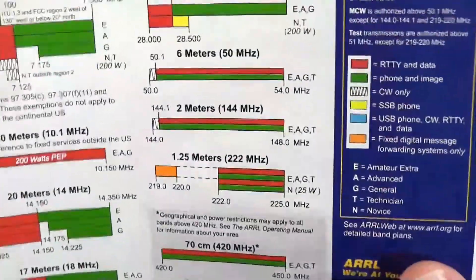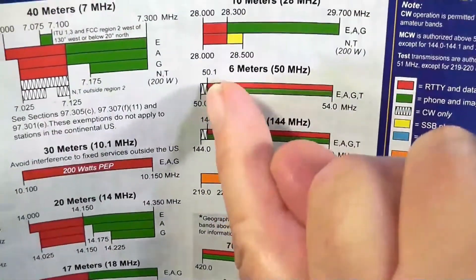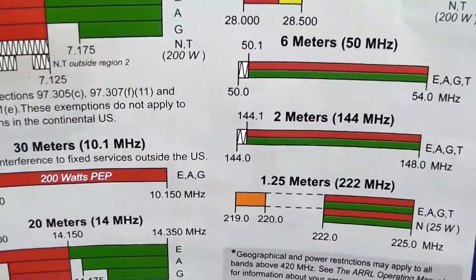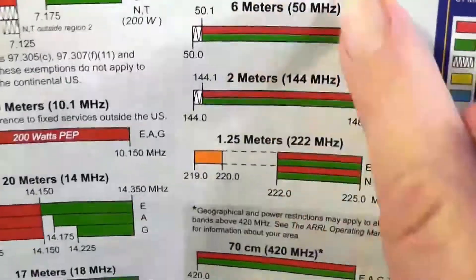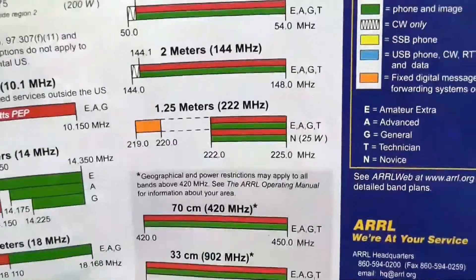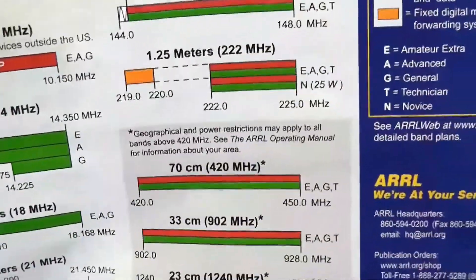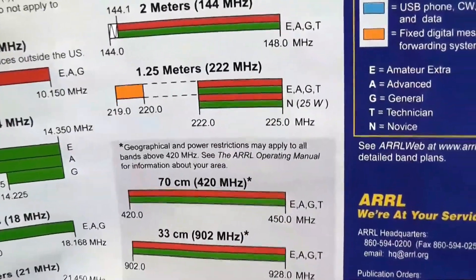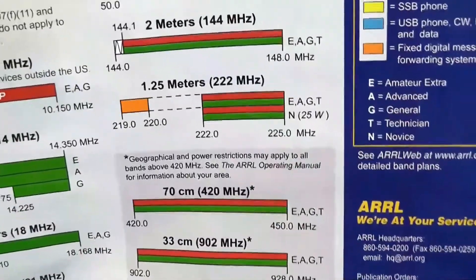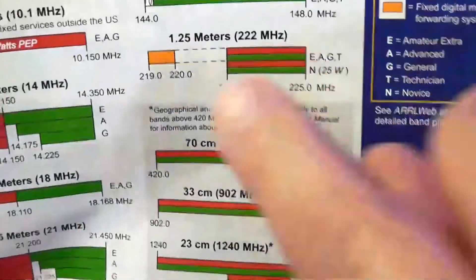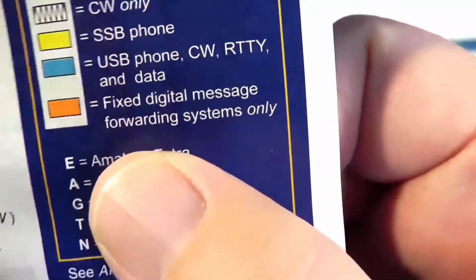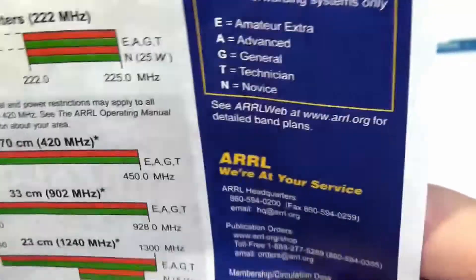Looking at privileges on 6 meters and 2 meters, there's a very small segment of each band set aside for CW only — these are called weak signal modes. Generally, FM will be up higher in the band. There is FM on 6 meters. 2 meters is the workhorse band of the technician, and the next workhorse band is 70 centimeters. There's also a band at 220 MHz (1.25 meters) with 3 MHz of space — we're starting to see equipment made for this band again. The segment from 219 to 220 MHz can be used by technicians, but only for fixed digital message forwarding systems.